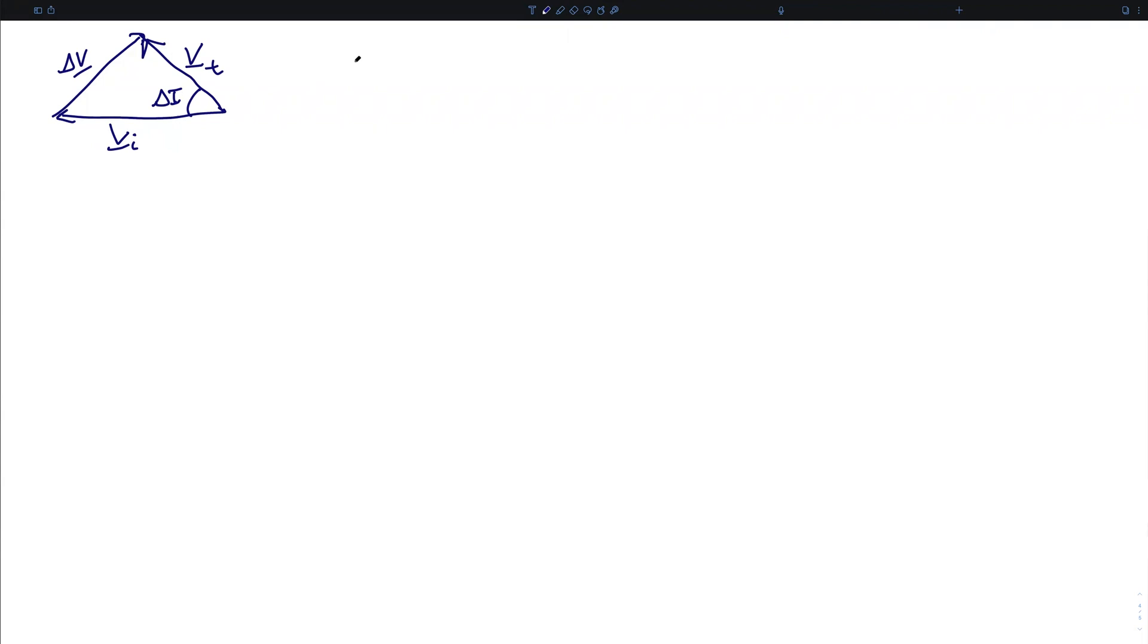We apply the law of cosines to this, and we can write the magnitude of delta V squared is the magnitude of V sub I squared plus V sub T squared minus 2 VI VT cosine of delta I.